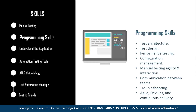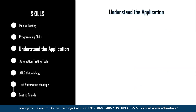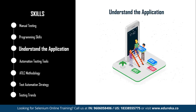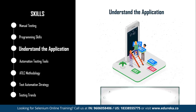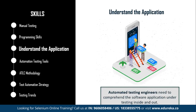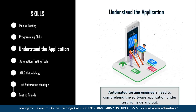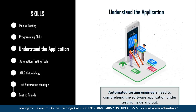Next is understanding the application. Common application details every automation tester needs to consider include which programming languages were used to develop the application, what platform it is built on, which databases are involved, whether there are web services or APIs connected to different parts of the system, and more. These points may vary based on the complexity of the application, so make sure you are completely thorough with the application you are going to test.